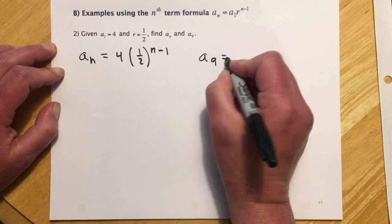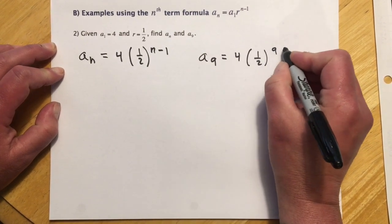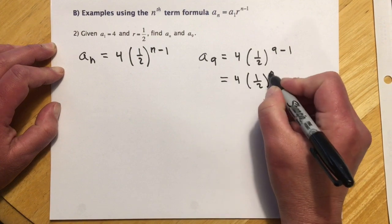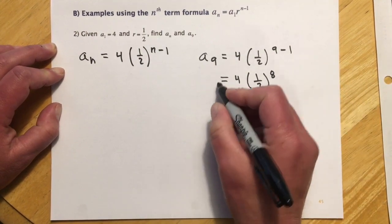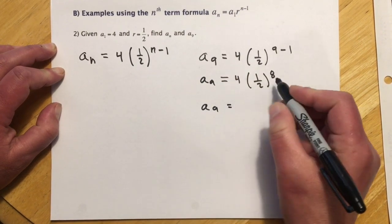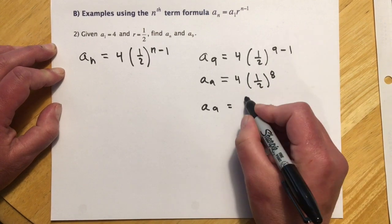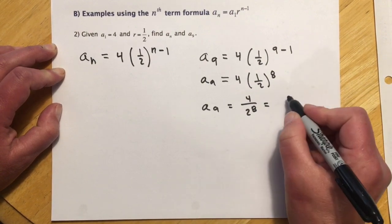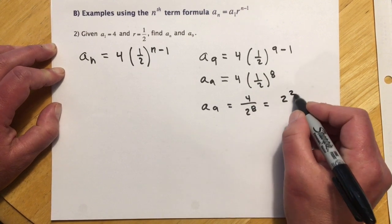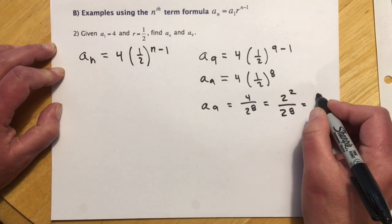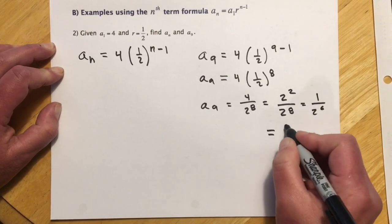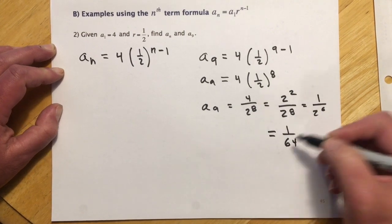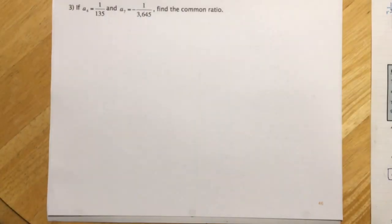So if I wanted to find the 9th term, that would be 4 times 1 half to the n minus 1. So 9 minus 1. So this will be 4 and then 1 half to the 8th. So you can see these ones are going to be exponentials. And a sub 9 is 1 half to the 8th times 4. So 4 over 2 to the 8th. And if we clean that up a little bit, if you want to be fancy about how you clean it up, because they want the fraction, they don't want a decimal here, you can think of it as 2 squared over 2 to the 8th, which means it's going to reduce to 1 over 2 to the 6th. And 1 over 2 to the 6th is 1/64th. You can also make this a 4 and divide and then get 64.